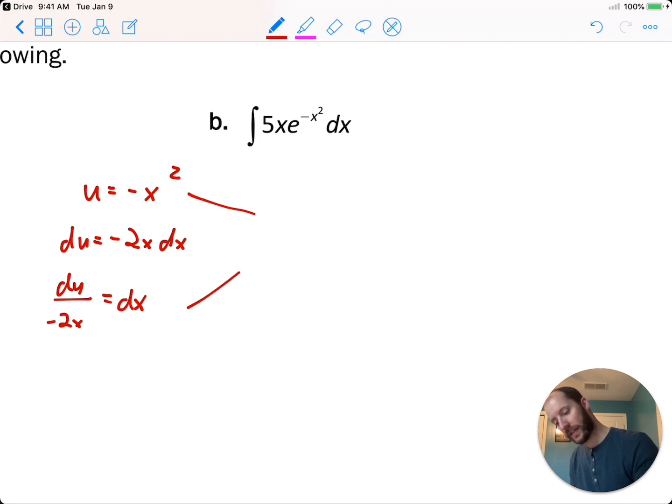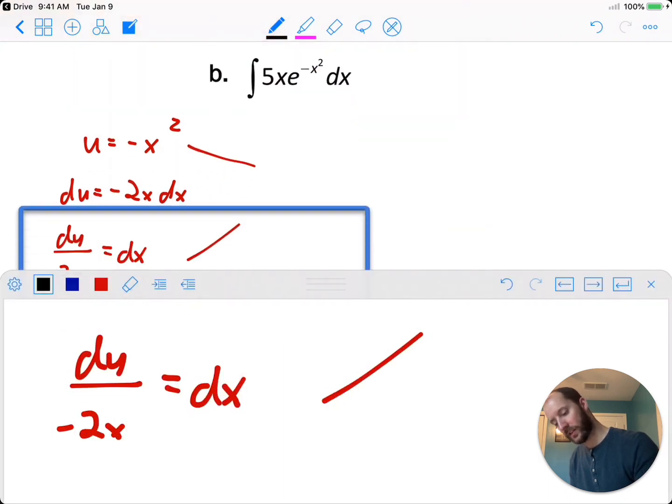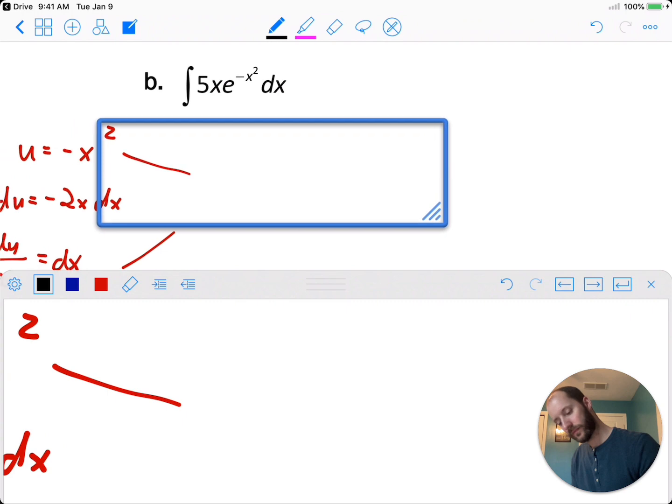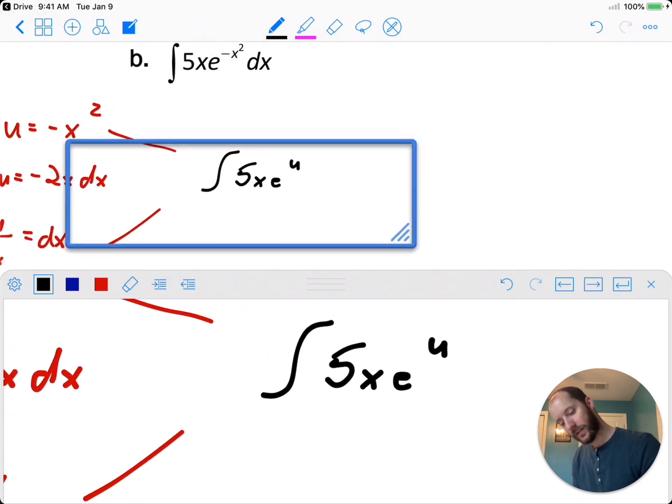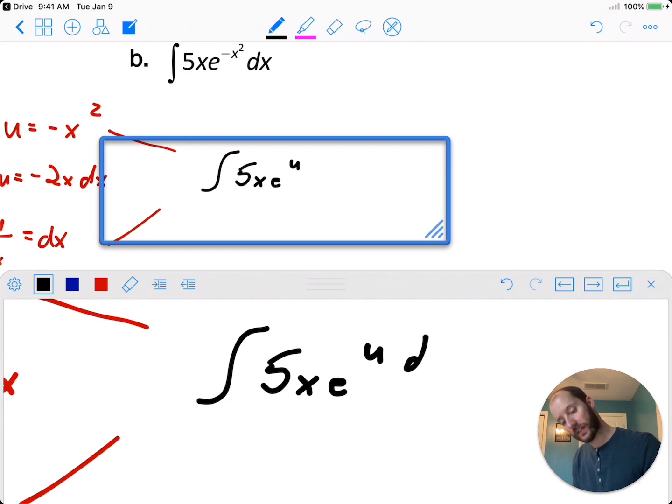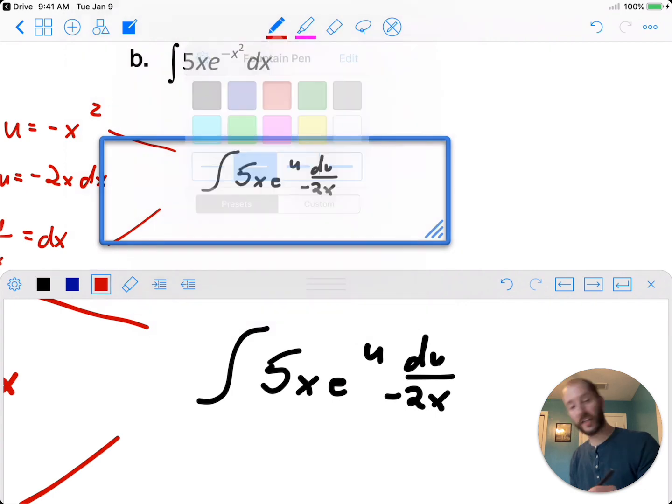Now you see some nice things are going to happen. The x's cancel out. The 5 and denominator negative 2. Bring those out. We have just e to the u, du left for integral.